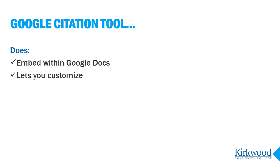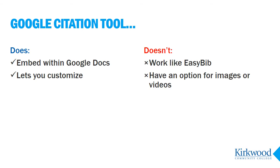First, a little bit about what this tool does and doesn't do. This tool is essentially a form you open within your Google Doc that has you fill in information about each source you want to cite, then it formats the citations for you. Once you enter the information, you can also easily make edits to the citation once it's been added to the end of your paper. This citation tool is not like EasyBib or similar citation generators where you just give the title or URL and it creates a citation on the spot. Instead, this tool guides you in what information is needed, then does the formatting for you.